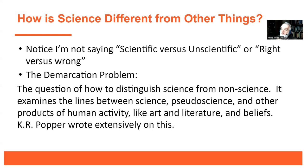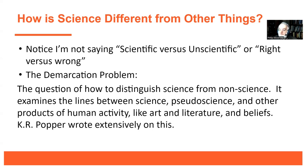The demarcation problem is a key term you're accountable for. It's basically how to distinguish what is science and what is not science. Is astrology a science? Probably not. Is English a science? Probably not, but we're less certain about why. It's not just about whether something is good or bad — we can think about art, literature, and religious beliefs. Are they scientific? On what basis would we make those decisions?